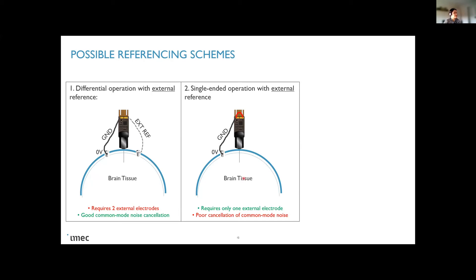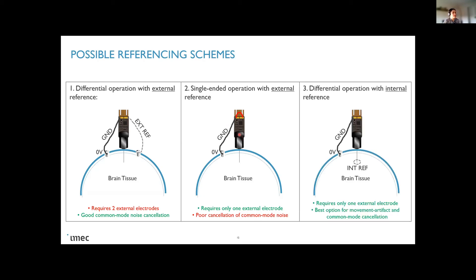You can have a single ended operation where you connect both ground and reference together. So in this case, you only need one external reference. And I think a popular case is when you use differential operation with internal reference. In this case, you only need one wire, but you also have a cancellation because the electrode is internally in the brain. So I think this is probably one of the best choices to achieve a common mode cancellation.